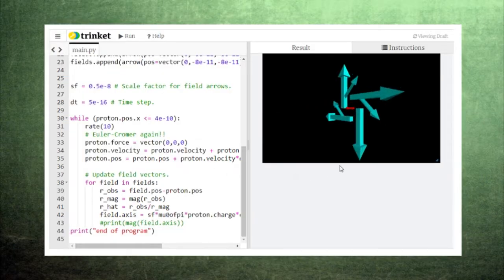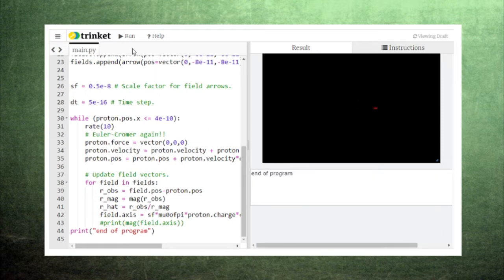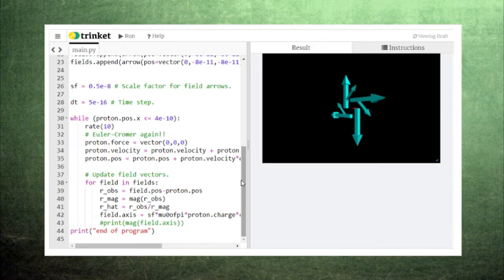As the proton moves forward, the magnetic field vectors get stronger until the proton passes these points and the magnetic field drops off. Notice that the field vectors form a loop around the proton's velocity vector since the cross product always gives a vector perpendicular to the velocity.